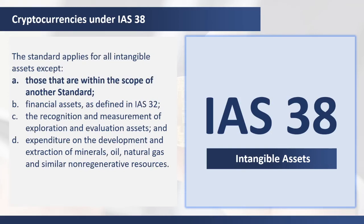However, intangible assets that are within the scope of another standard are not covered by IAS 38. This is the reason why cryptocurrencies that are held for sale in the ordinary course of business are covered by IAS 2 on inventories, despite being actually an intangible asset.